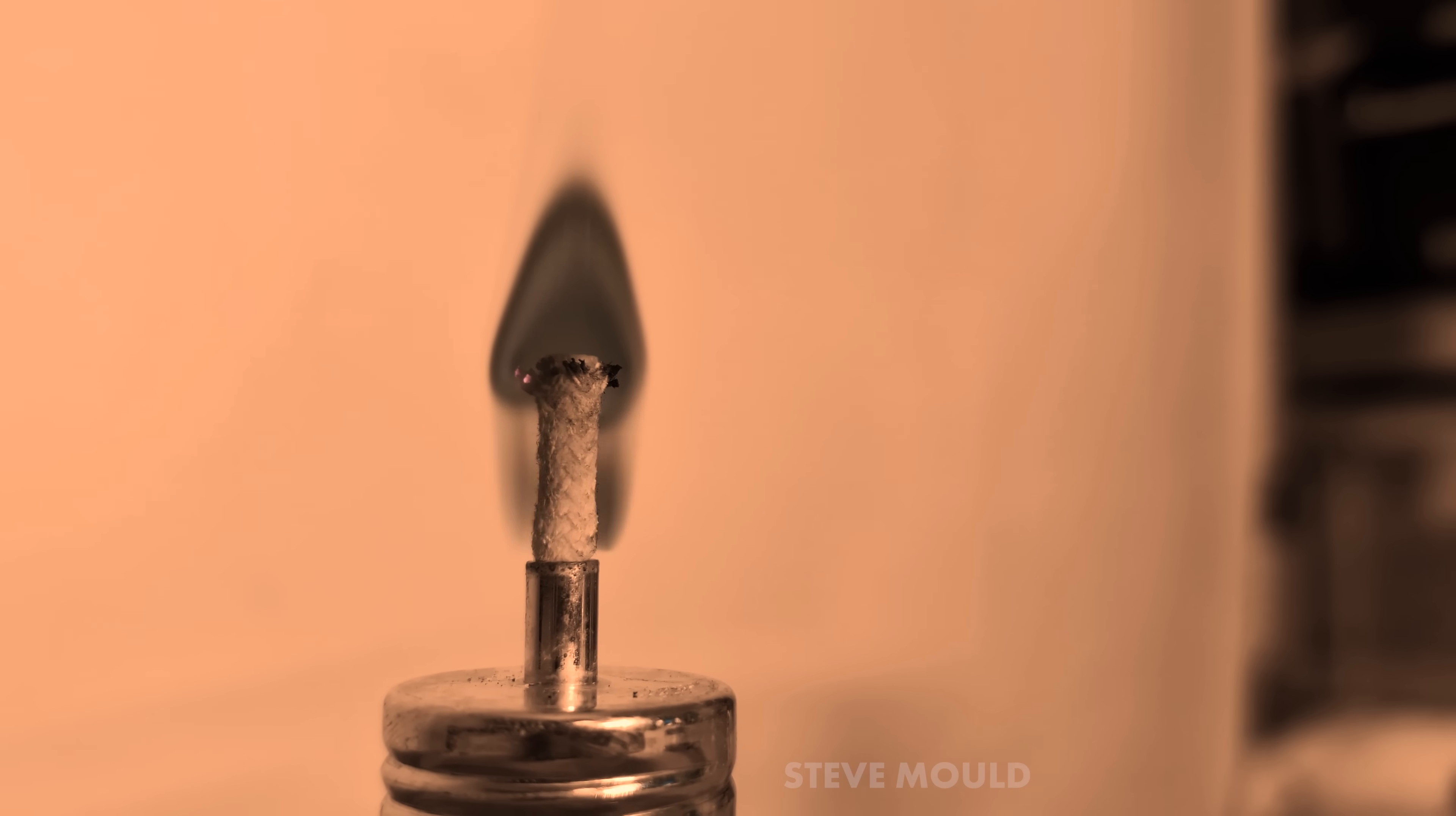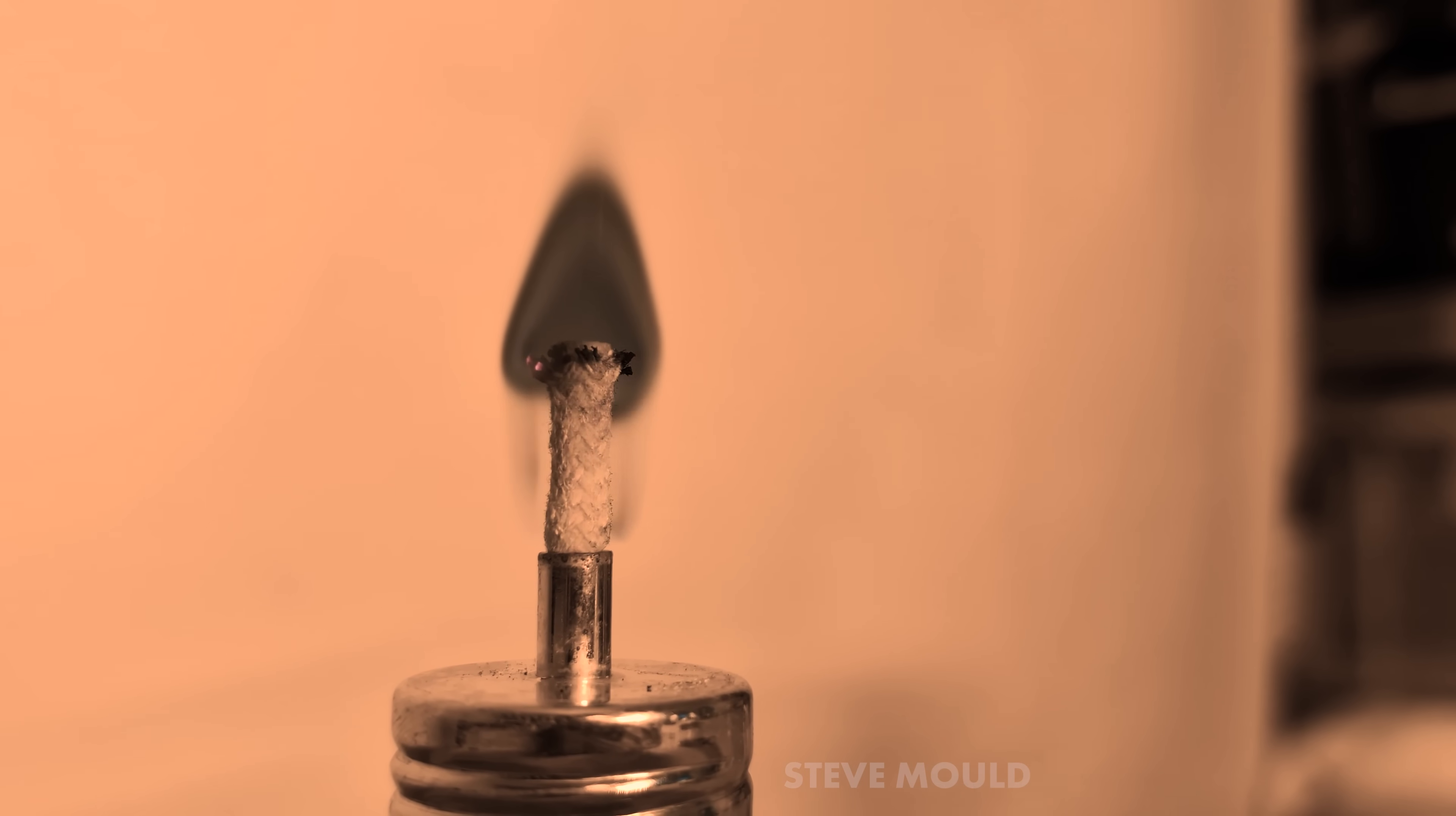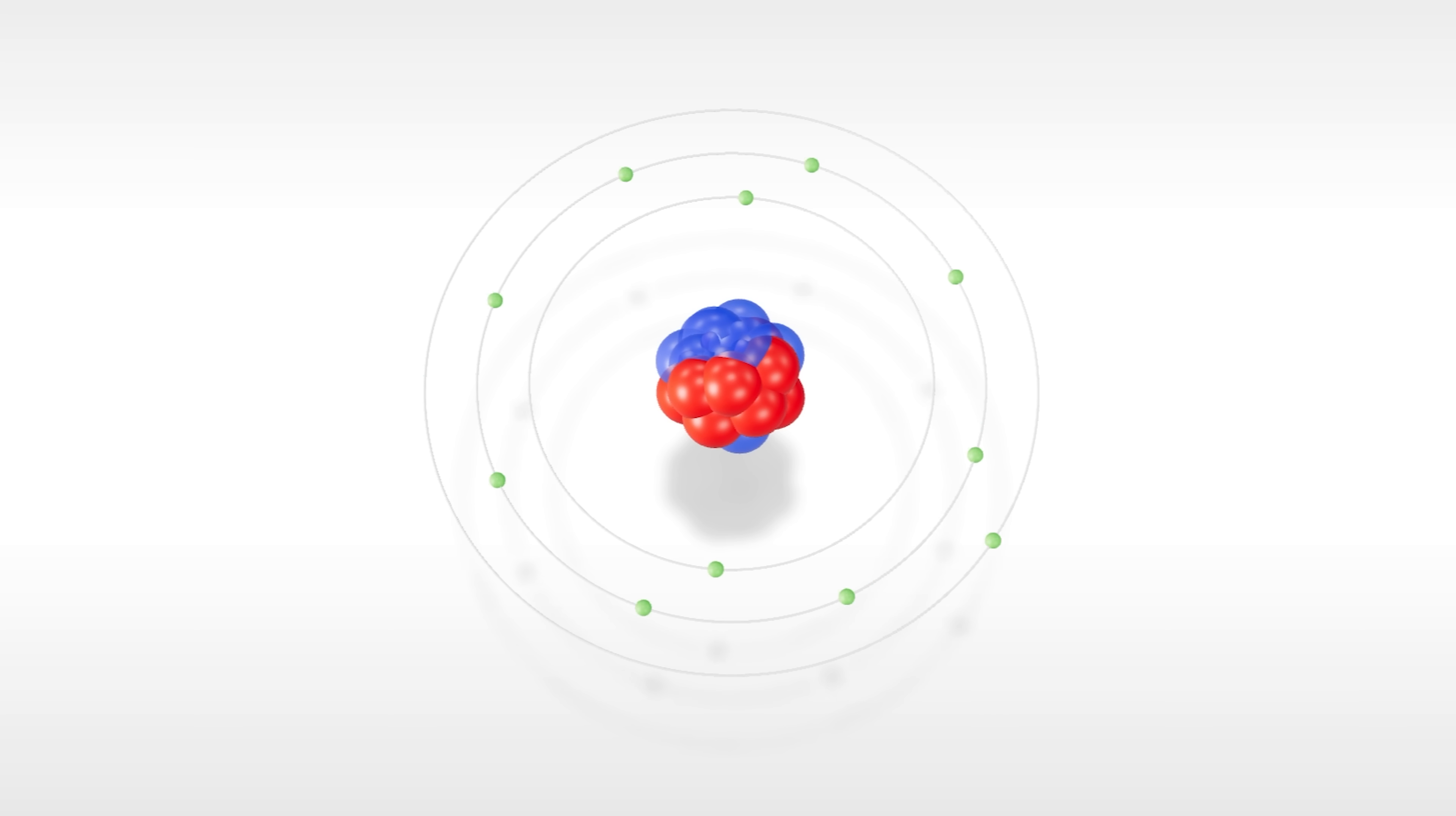But what makes them so bad at rendering color is also the thing that turns this flame black. You might know this already, but if you excite an atom in the right way, an electron will jump up to a higher orbital. And when it drops back down again, it releases a photon of light.